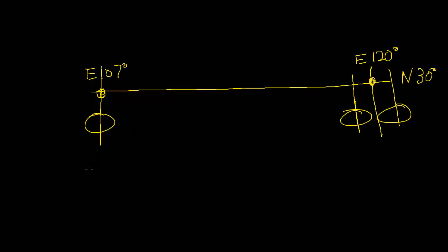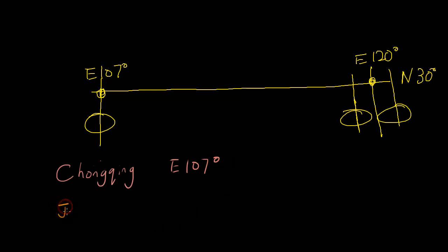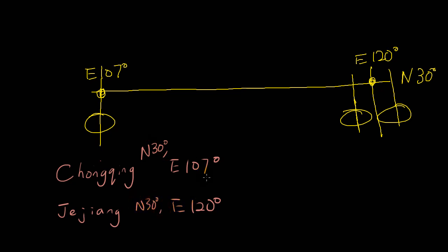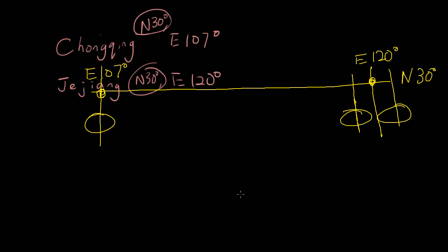Chongqing is at E107, or 107 degrees east. Zhejiang is at E120. They're both on N30 — 30 degrees north — which is very important. If they're not on the same latitude this won't work. We are finding the distance between points that are on the same latitude, which is the same small circle. Let's go through the steps.